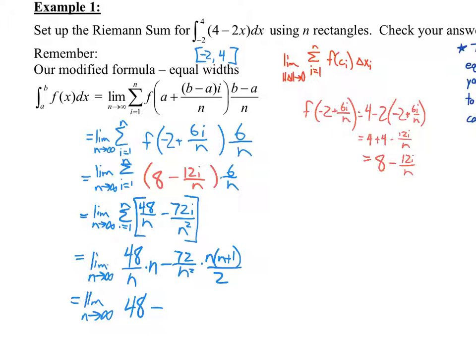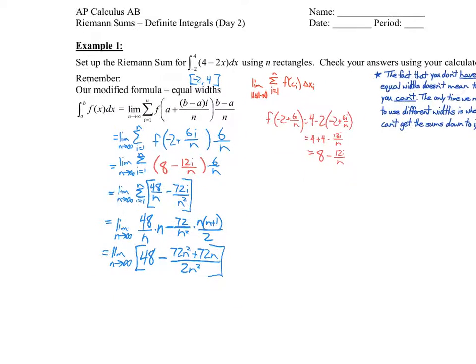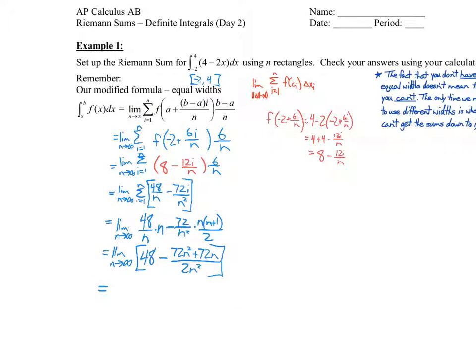So, n times n plus 1 over 2. And that we need to simplify a little bit. That's a 72n squared plus 72n all over 2n squared. Now, could we simplify that more? Sure. Do we have to? No. Because we're just taking the limit as n approaches infinity now. So, what's the limit of 48? 48. What's the limit of? There we go. It's going to be minus 36. So, minus 72 over 2 is a minus 36. So, this whole thing just equals 12.